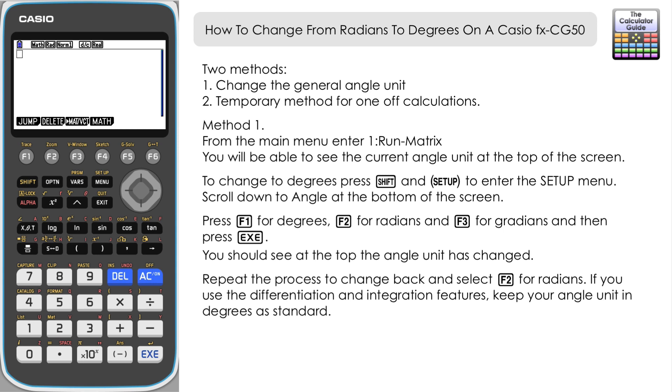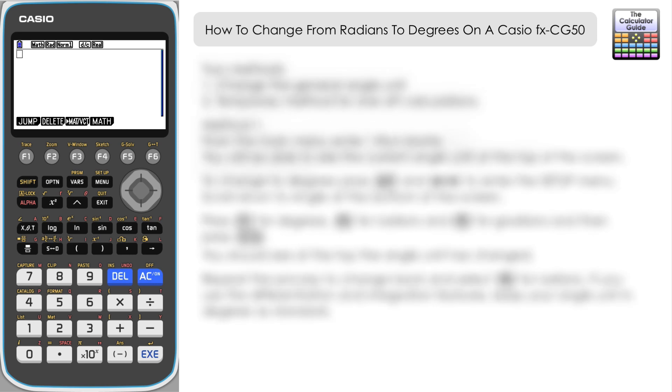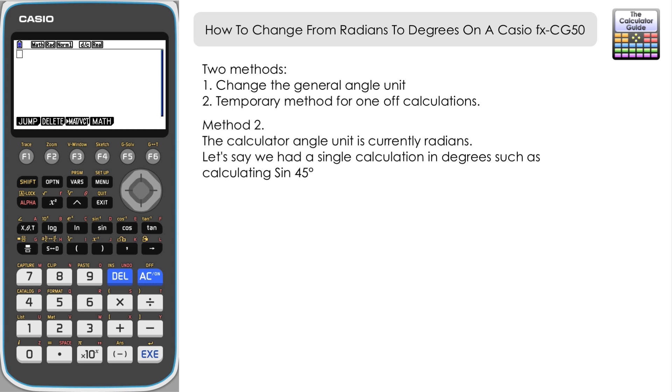Now let's explore the second method. Let's say that the majority of your calculations involve using radians, but you've got a one-off calculation that happens to be in degrees. We can actually keep the calculator in radian mode and assign an individual angle as being in degrees.